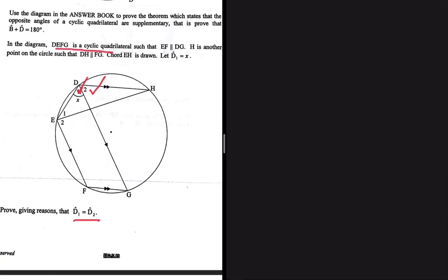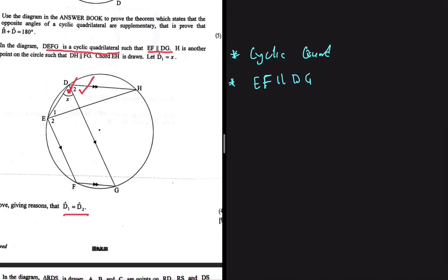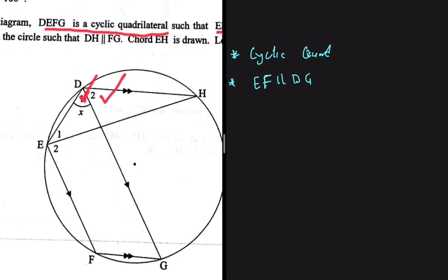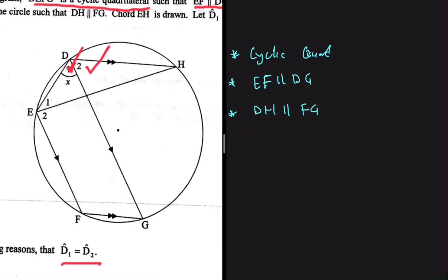We're told that in the diagram, DEFG is a cyclic quadrilateral, and that is key. Our first keyword is cyclic quadrilateral. We know there are a few properties with regards to a cyclic quad. We're also told that line EF is parallel to DG — grade eight mathematics tells us there are properties around parallel lines. We're also told that line DH is parallel to line FG.